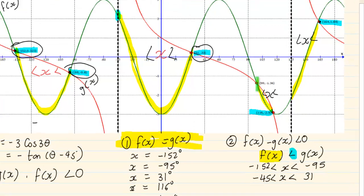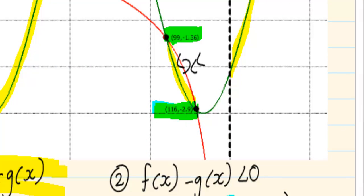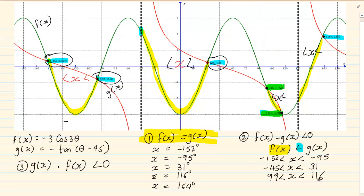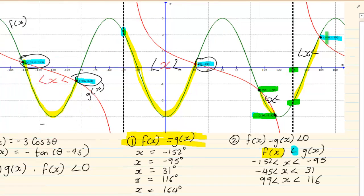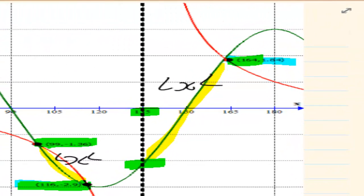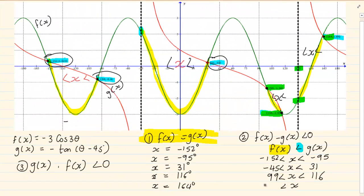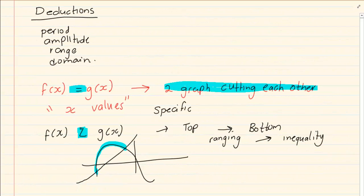Now let's do this one here. We have x with our inequalities — it is going from 99 till 160. Then our last one is going from 135 till 164. So we have x from 135 to 164. You must realize that when I have an inequality, my answer is also going to be an inequality. But when I have a specific equal to sign, then my answer is also going to be specific.